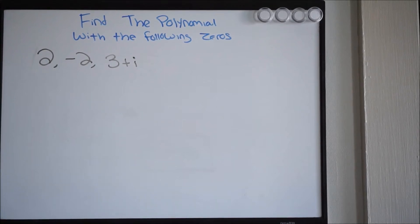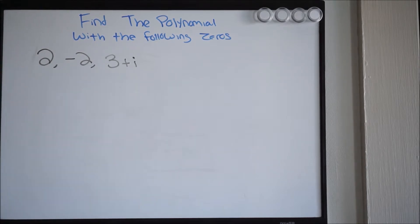Today we're going to be talking about finding the polynomial with the given zeros. In this particular problem, they give you the zeros and they're asking for the polynomial — the equation of this polynomial. So we have to work in reverse here.